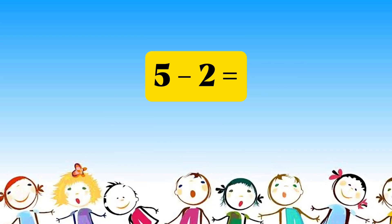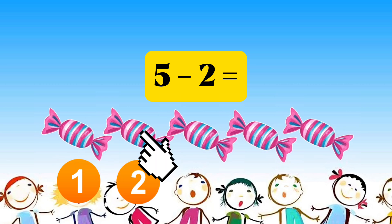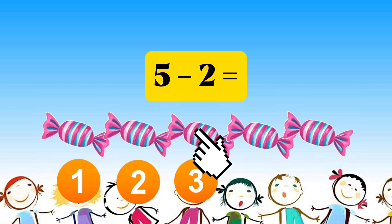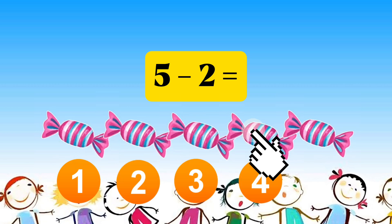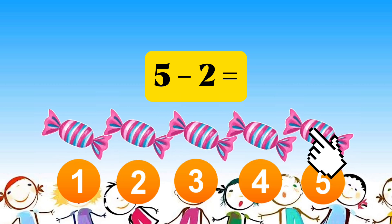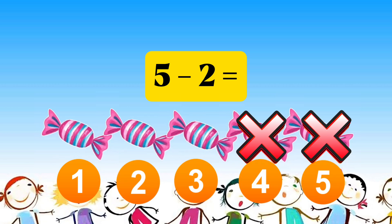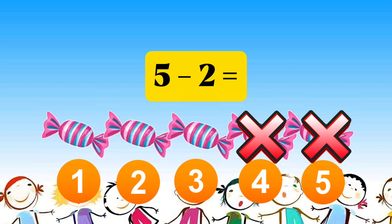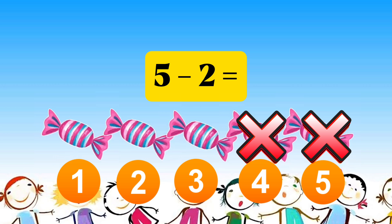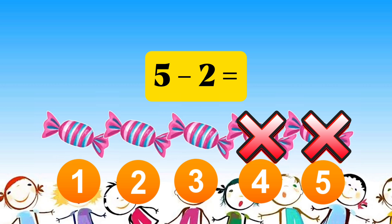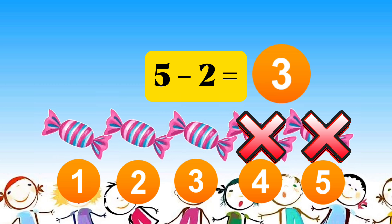Five minus two equals one, two, three, four, five. Less two equals three.